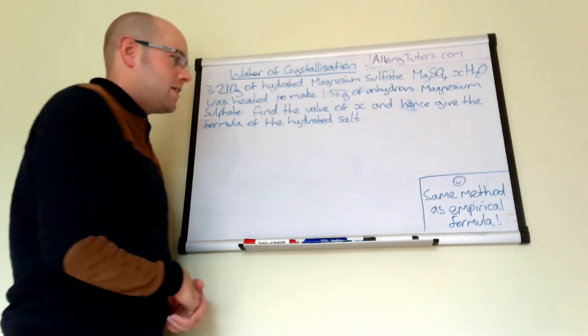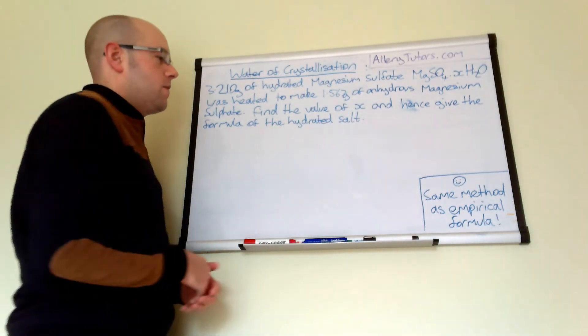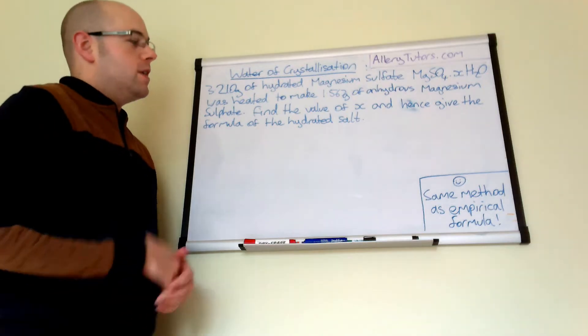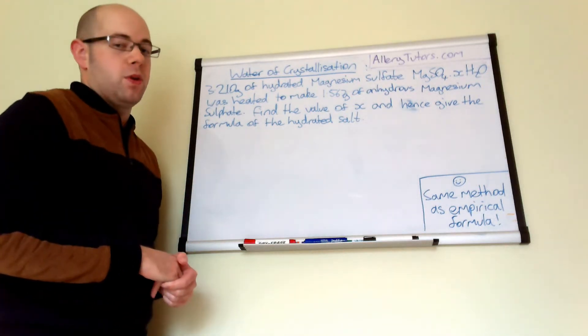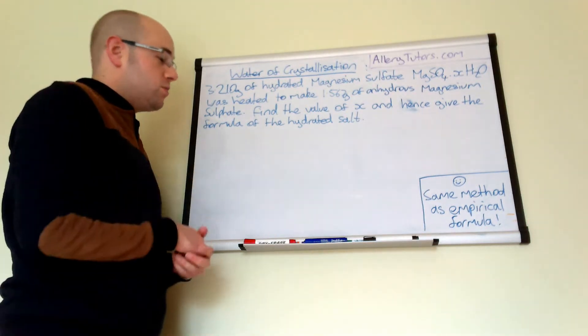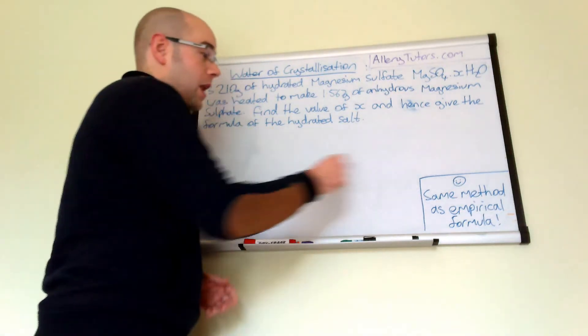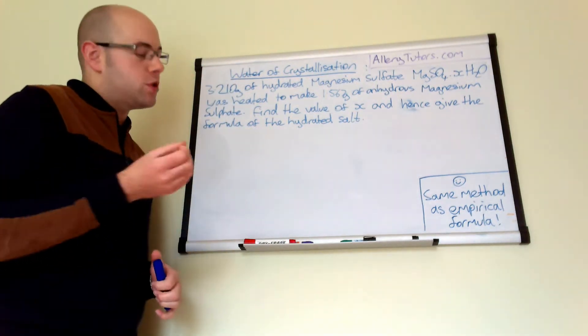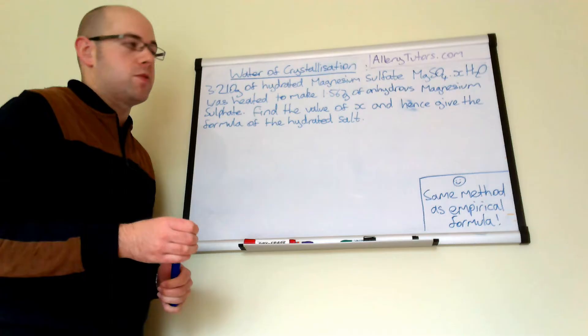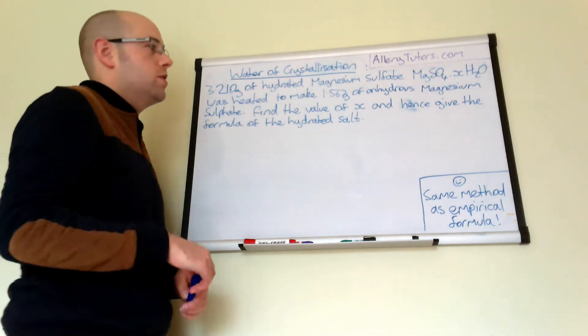Find the value of X and hence give the formula of the hydrated salt. So this is actually, it looks scary in the modern days. But the first thing we're going to do is set it out a bit like an empirical formula except we don't have atoms like an empirical formula but we have two parts of this molecule.